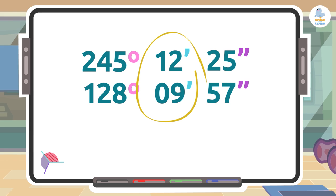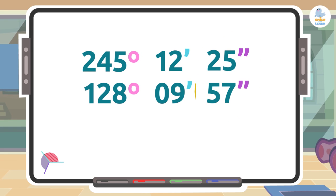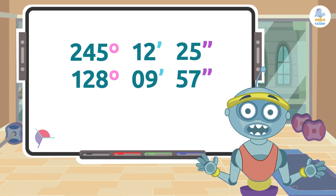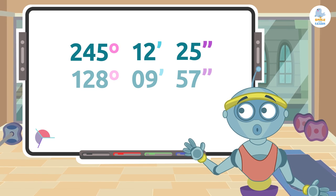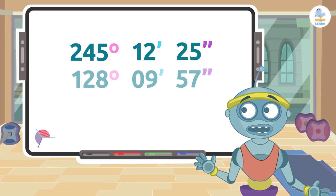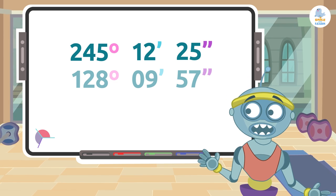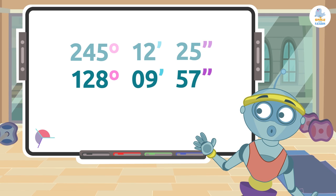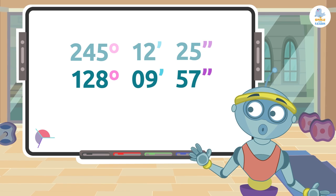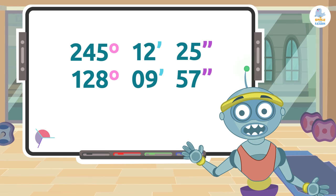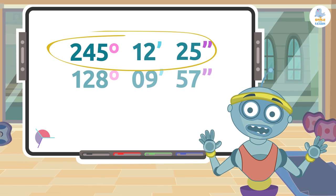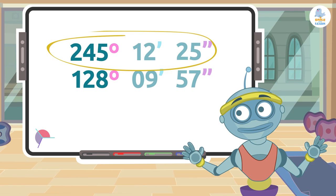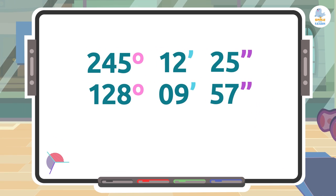The angles we will subtract are the following: 245 degrees 12 minutes 25 seconds and 128 degrees 9 minutes 57 seconds. Which one will we place on top? That's it, this one here, since the degree is larger. Very good. Once we have placed the angles correctly, we have to subtract the seconds first, then the minutes, and finally the degrees.